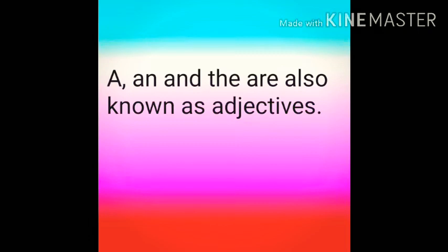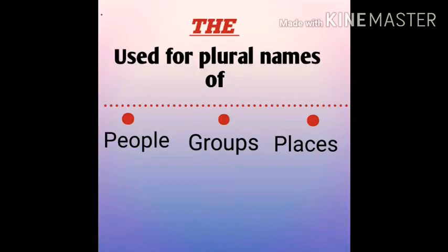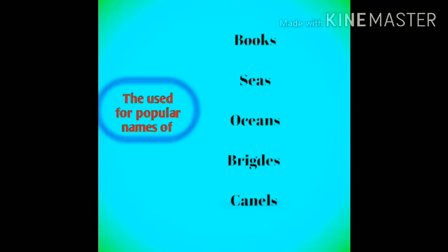A, AN, and THE are also known as adjectives. The is used for plural names of people, groups and places. The is also used for popular names of books, seas, oceans, bridges and canals.